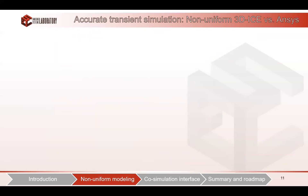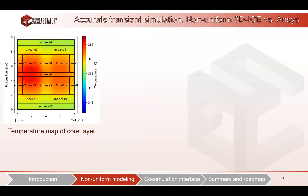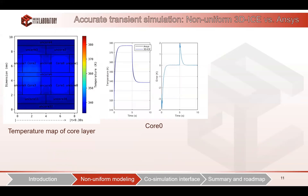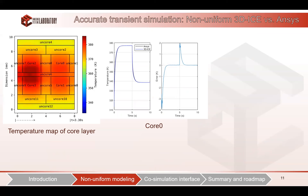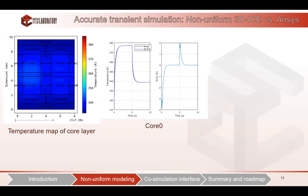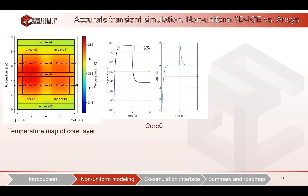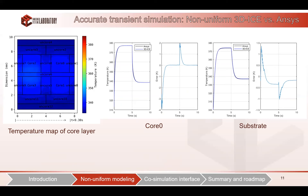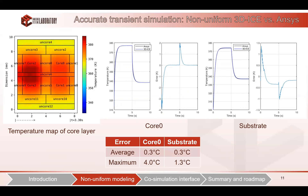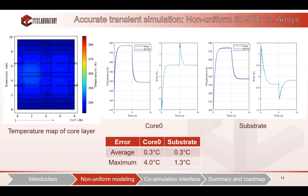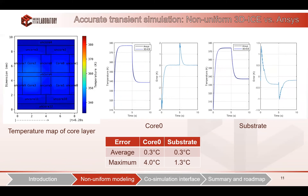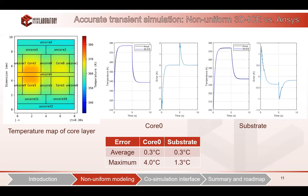Non-uniform 3Di cannot only perform steady state simulation — it can also manage transient simulation. Here is the animation of the temperature map for the core layer. We also verify the transient simulation results with Ansight. In particular, the transient temperature response of the floor plan element core zero is included in the first subplot for both Ansight and non-uniform 3Di. The second subplot shows the error between the two simulation methods. Similarly, the transient temperature response of the substrate layer is demonstrated in the right figure. This table summarizes the error distribution. The average error is only 0.3 degrees, and the maximum error is 4 degrees, occurring only at the beginning of the simulation. In this experiment, the grid size for core zero is two times finer than the substrate, but both demonstrate high accuracy.